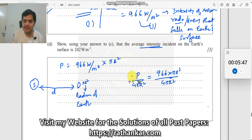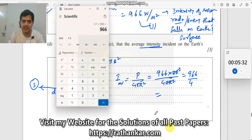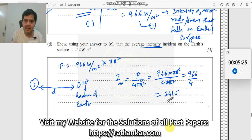This should now be equal to 966 times pi r square divided by 4 pi r square. This is your average intensity on the earth. The pi r square cancels, so you are left with 966 divided by 4. Let's calculate: 966 divided by 4 equals 241.5, which is nearly equivalent to 242 watt per square meter as expected.